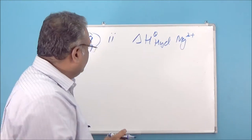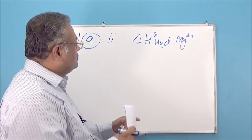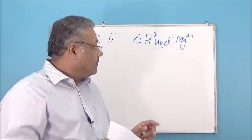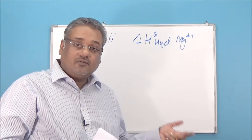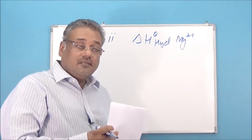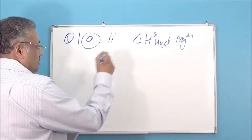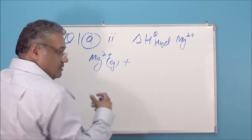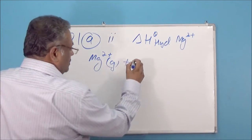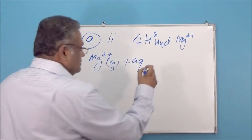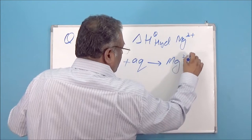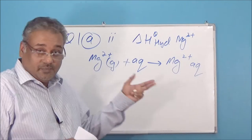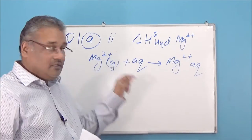The second part of the question asks students to write an equation to show the hydration enthalpy of the magnesium ion. As the definition clearly states, it's always with respect to one mole of the ions. You need to take the magnesium ion in the gaseous state, and since you are dissolving this in a very large amount of water, it's written as aqueous, and it changes into the magnesium ion in aqueous form. The enthalpy change of this reaction is the hydration enthalpy of the magnesium ion.